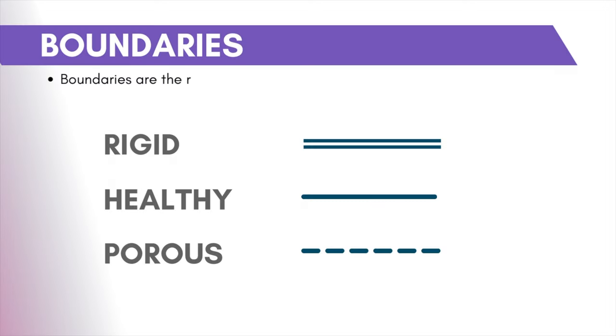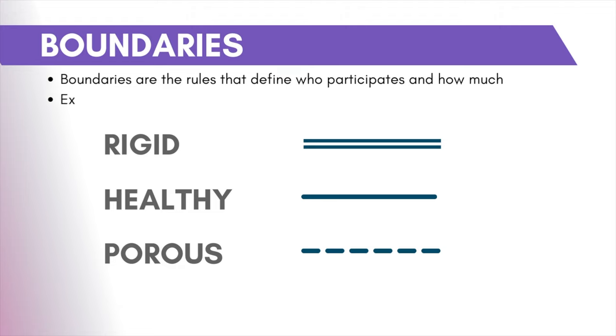Another thing I want to capture in my diagram is boundaries. If you're watching this you probably have some idea that structural family therapy is kind of big on boundaries. Boundaries in a structural systems lens are in some way about rules of engagement. A boundary around one group of people represents a segment of people who all have the same set of rules, and what the rules of engagement are between them and people in another group.